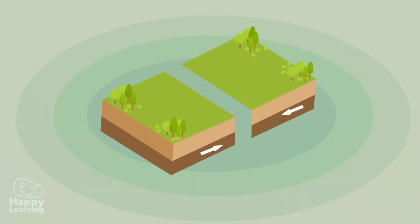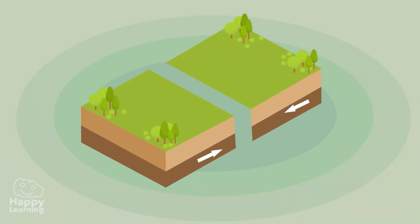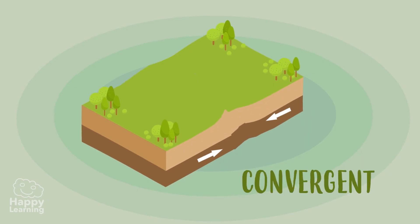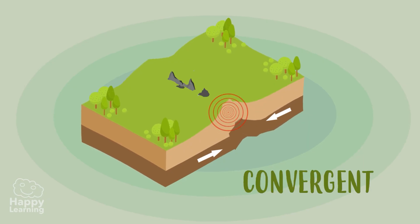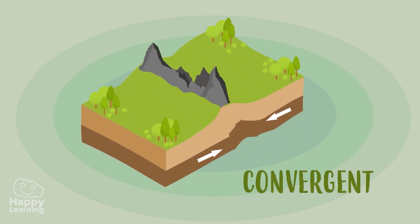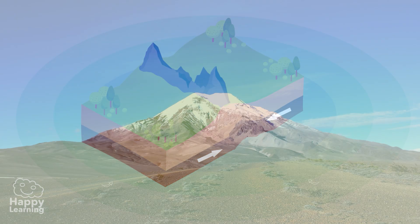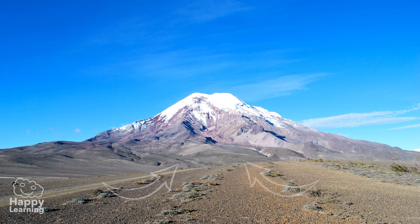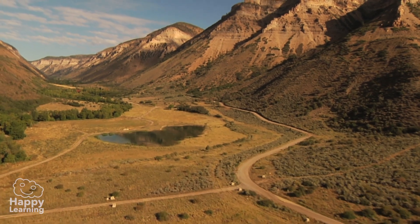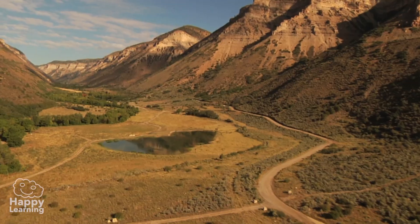When the tectonic plates bump into each other, they are called convergent plate boundaries and form a collision area where new mountains or mountain ranges like the Himalayas or Alps are formed.